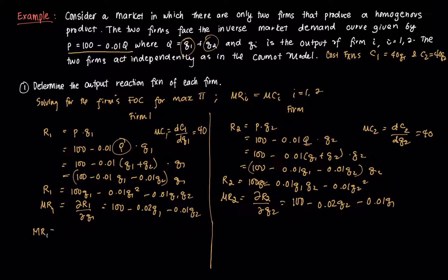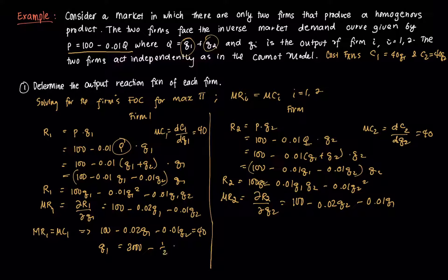Setting MR1 = MC1: 100 − 0.02Q1 − 0.01Q2 = 40. Isolating Q1 and simplifying gives Q1* = 3000 − ½Q2. Notice that Q1* is a function of Q2 — this is the output reaction function of firm 1.